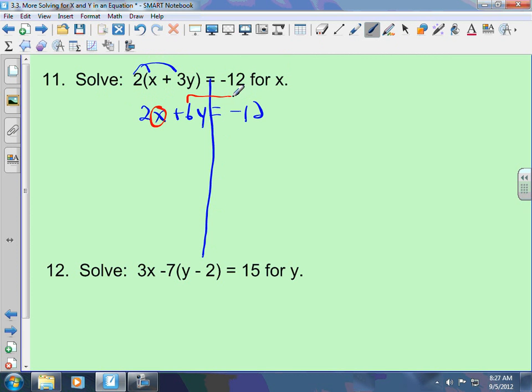So, that means I need to move my 6y over here. So, I'm going to subtract 6y to both sides. 6y minus 6y is 0, leaving me 2x, equals... I cannot add the negative 12 and the negative 6y, because they don't both have y's. Put your letter first. Minus 6y minus 12. Now, what am I going to do? That's right. Divide everything by 2.